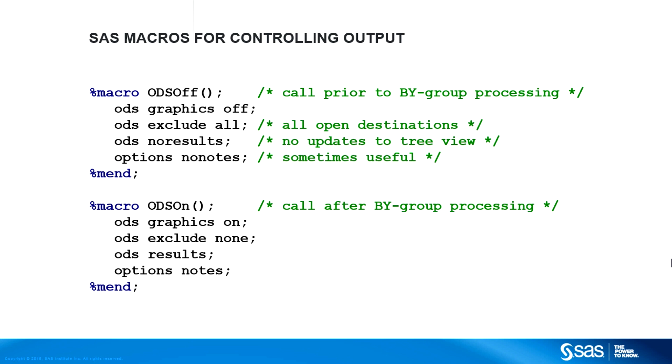For procedures that do not support the NO PRINT option, you can use these simple macros. Use the ODS OFF macro to turn off the ODS system, including ODS graphics, prior to calling a procedure. Turn the system on again when the procedure has completed.